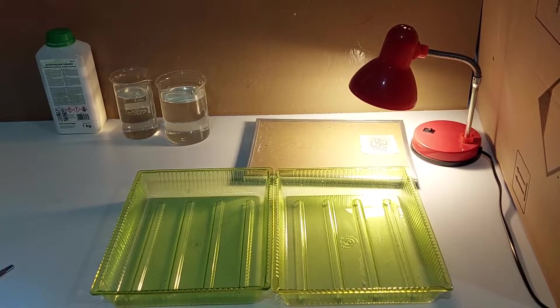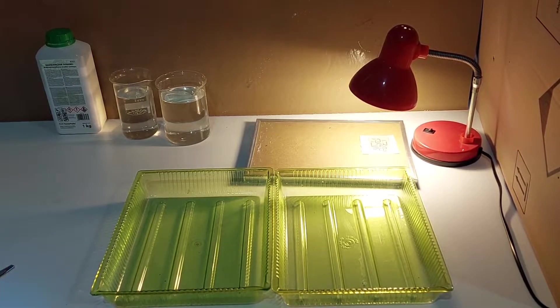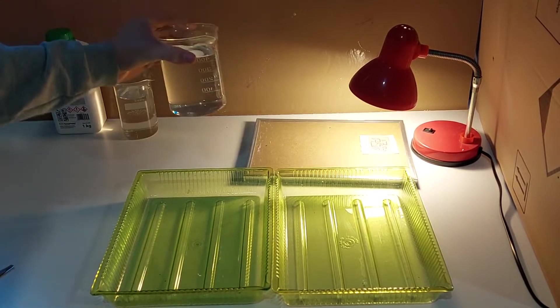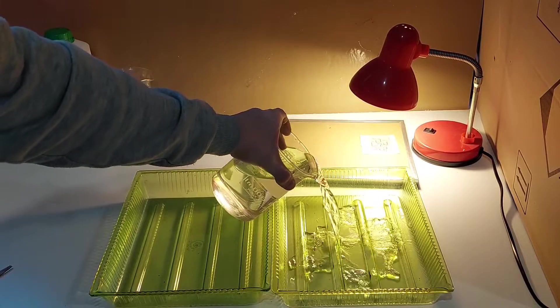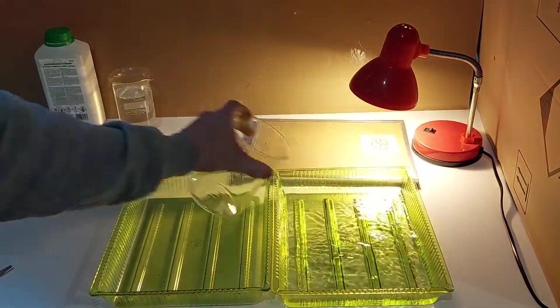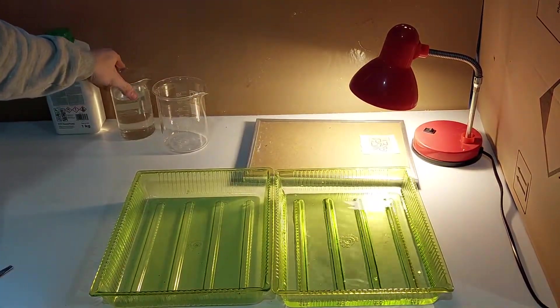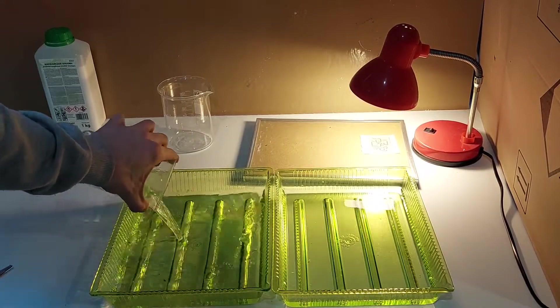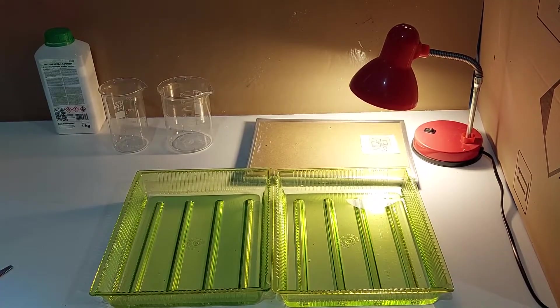While it's exposing, we can pour in the developer and etchant in their own separate trays. So I'm going to pour my etchant in this tray, and my developer here. And here I have them both poured in.